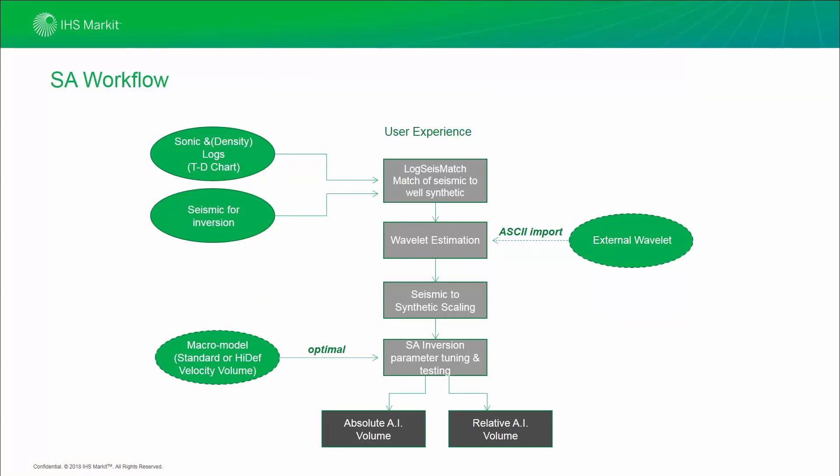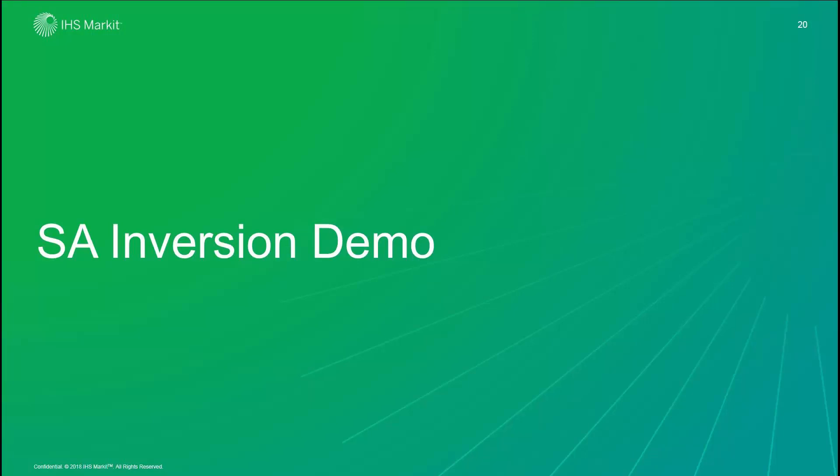Let's look at the SA workflow. The inversion works through four screens. We have data that has been loaded for coloured inversion: the sonic log, the density log, and the time depth charts. We then match the logs with the seismic, choosing an optimum trace. We go through wavelet estimation, or if we are not happy with the correlation, we can import an external wavelet. Wavelets with four different formats can be currently imported: SegWi, EPS, HRS and TKS. The synthetic to seismic scaling is computed automatically. The macro model is then selected, and the various parameters are tuned and tested before being applied to the inversion to generate our absolute and relative acoustic impedance volumes.